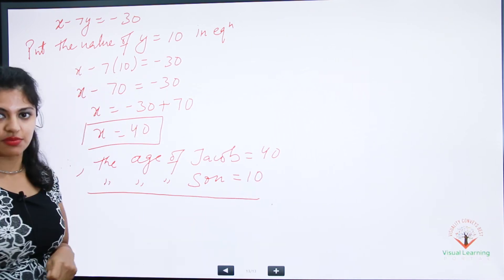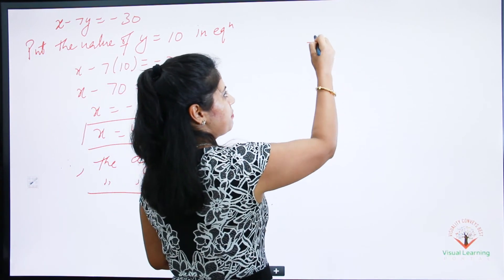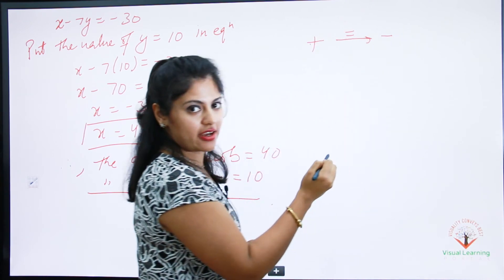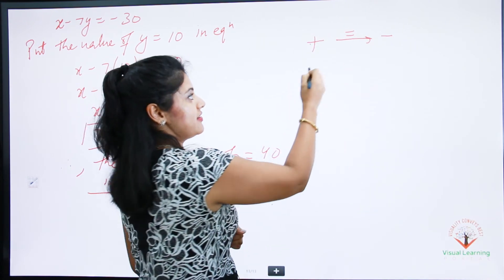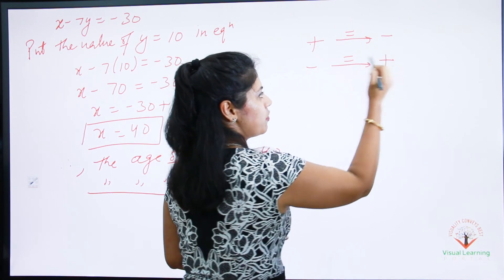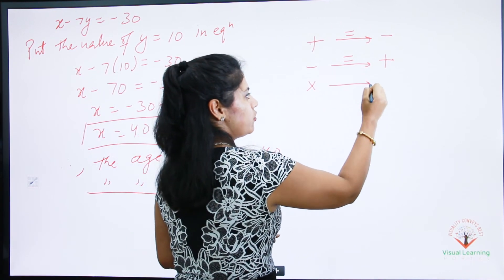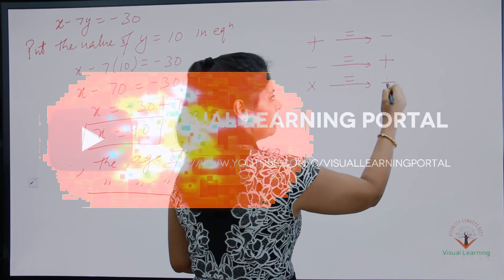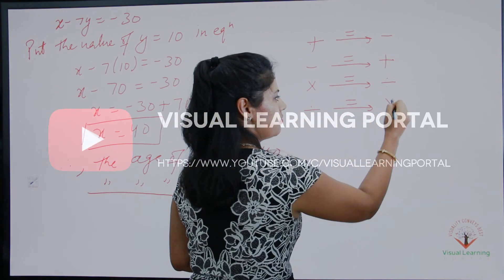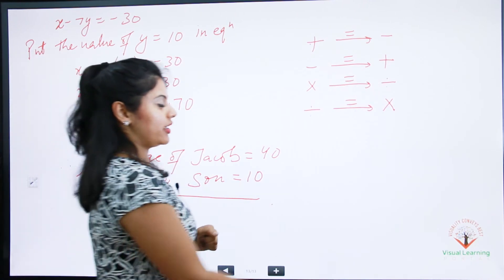This is how to solve the question using the substitution method. Always remember: when a term crosses the equal sign, plus becomes minus, minus becomes plus, multiply becomes divide, and divide becomes multiply.